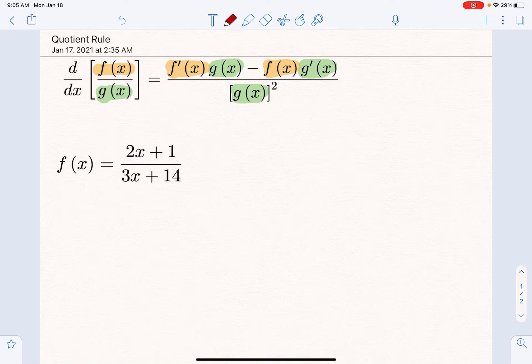So first example: (2x + 1)/(3x + 14). Obvious quotient rule here. The first piece we're going to need is the derivative of each part, which the derivative of the numerator is 2, and the derivative of the denominator is 3.